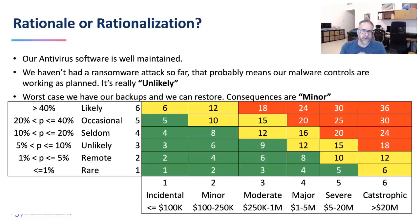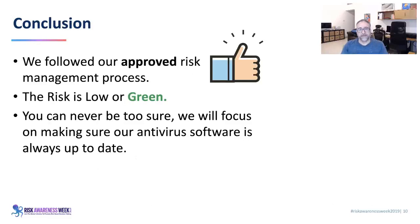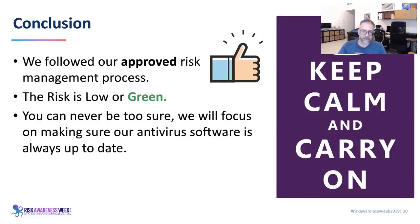They end up saying something like: we have antivirus software, it's well maintained, no worries. We haven't had any ransomware attacks in the past, so it's highly unlikely. And worst case, we have backups — we can just restore, no major consequences. They place the dot and it's green. They are very happy because they followed the approved risk management process. They say everything is in control, and they'll focus on keeping antivirus updated. The message to the CEO is: keep calm and carry on.